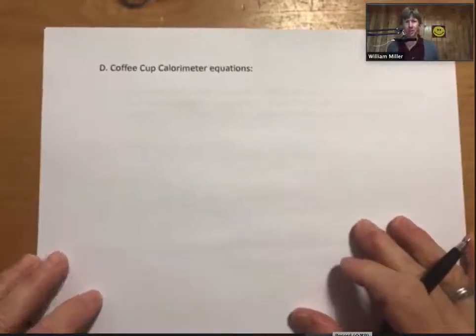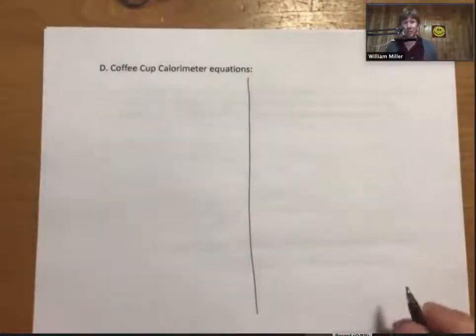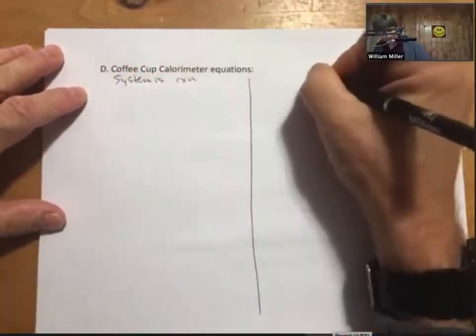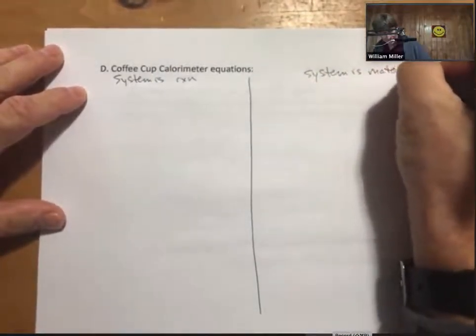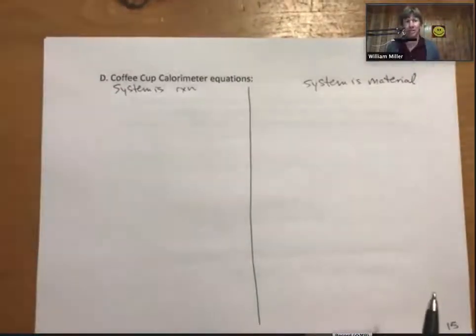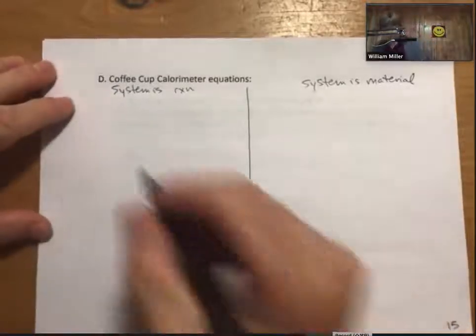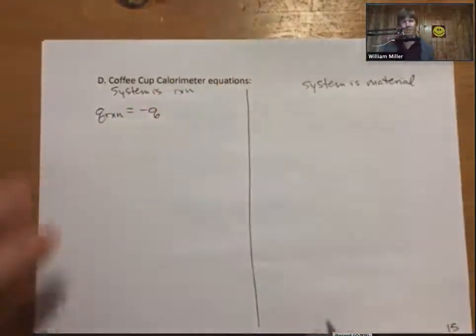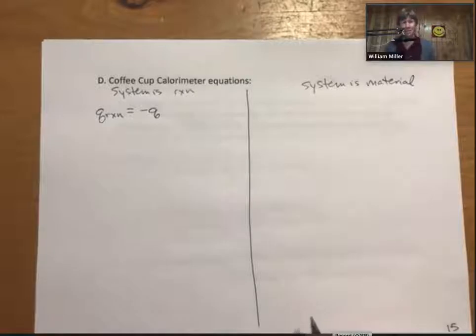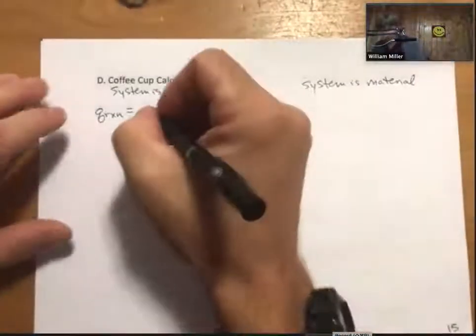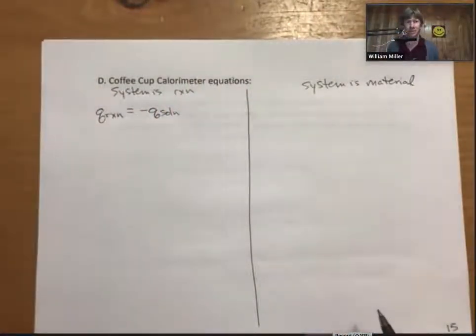So now we have the coffee cup calorimeter equations. I'm going to ask you to draw a line down the middle. We do have two cases. We have that the system is a reaction. And we have the system is a material. So similar, I think it's best to keep these two sets of equations separate in your mind. System is a reaction. Then q system becomes q reaction. It is equal to minus q of the surroundings. And what we will see is that the surroundings in the coffee cup calorimeter will be everything. But since the coffee cups keep all of the heat energy inside, then functionally the surroundings are the solution inside the coffee cups. Now I'm going to keep working these.